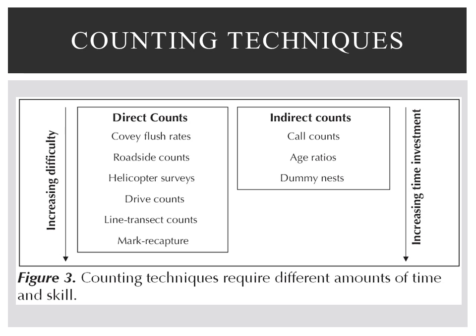Managers have several options for assessing quail population trends. None of the techniques are completely accurate, but when done consistently for several years, the results can indicate the trend of a local quail population and how it responds to management. The survey methods vary in their degree of difficulty, and the techniques, with a few exceptions, are applicable to bobwhite and scaled quail throughout Texas.